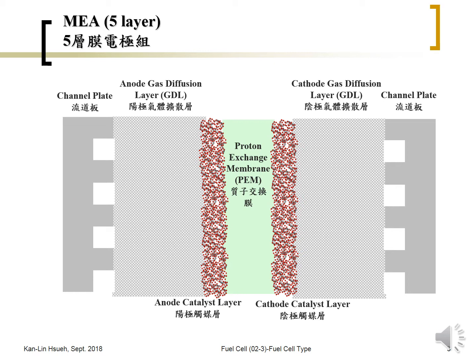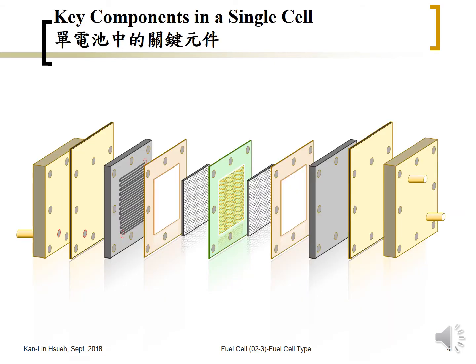Actually for a single cell the components are more than that, which we can show on the next slide. This is the expansion diagram of a single cell. Inside the single cell we can see first, of course, is the MEA, which has the anode catalyst layer, cathode catalyst layer, and a separator which is ionically conductive but electronically insulating.